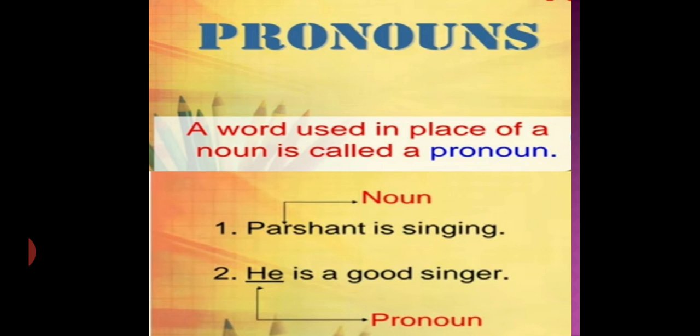For example, Prashant is singing. Here Prashant is a noun. If I say Prashant is singing, Prashant is a good singer, Prashant won many prizes, it doesn't look nice. So to avoid Prashant again and again, we will say Prashant is singing. He is a good singer. He won many prizes. Here, he is pronoun that is using here in place of noun that is Prashant.